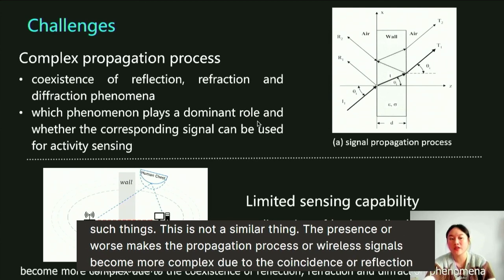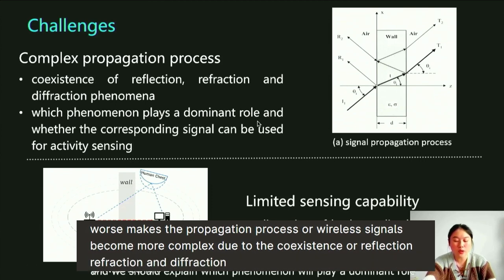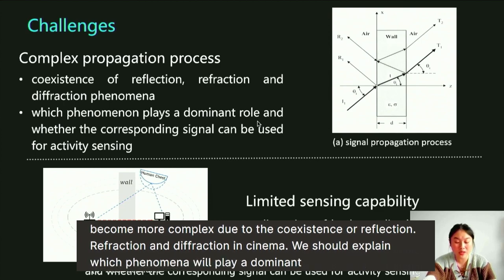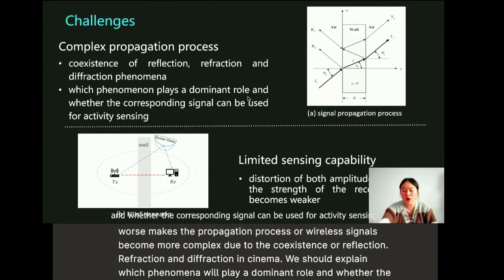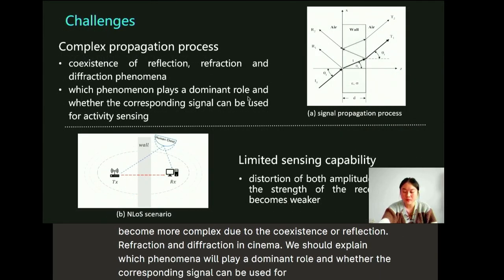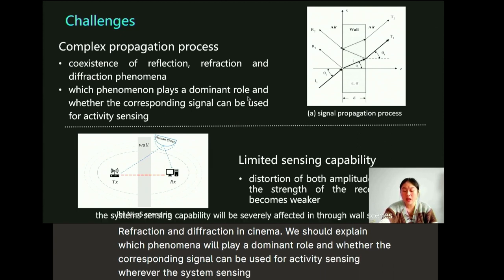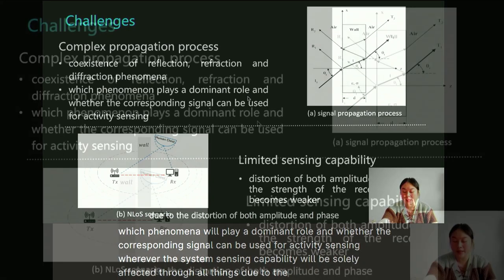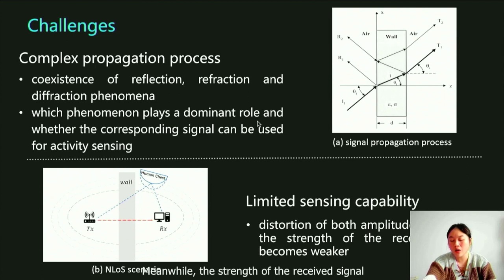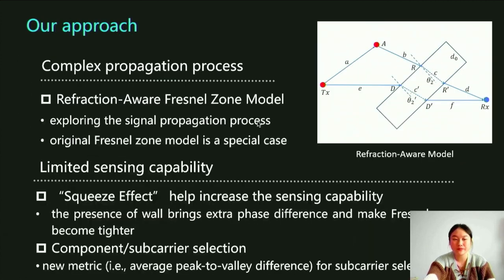The presence of walls makes the propagation process of wireless signals become more complex due to the coexistence of reflection, refraction, and diffraction phenomena. We should explain which phenomena will play a dominant role and whether the corresponding signal can be used for activity sensing. Moreover, the system sensing capability will be severely affected in through-wall scenes due to the distortion of both amplitude and phase. Meanwhile, the strength of the received signal becomes much weaker due to the absorption of walls.